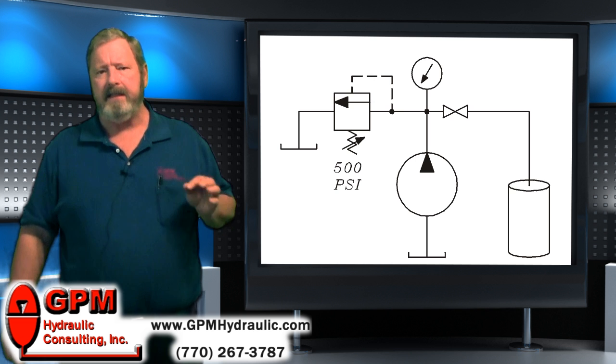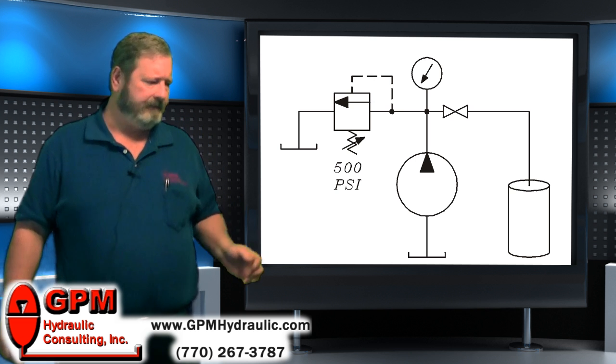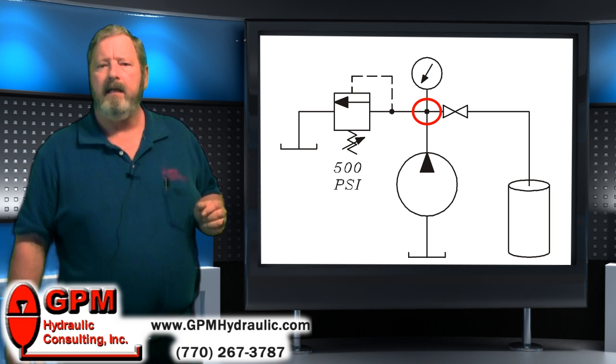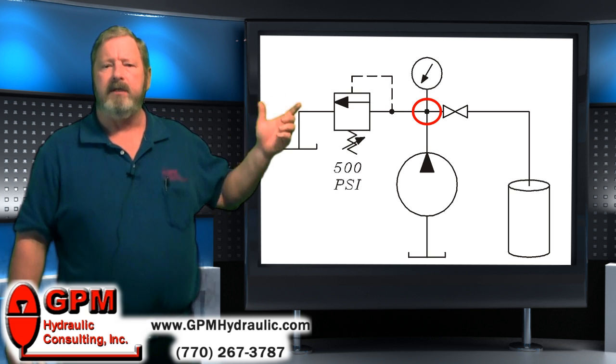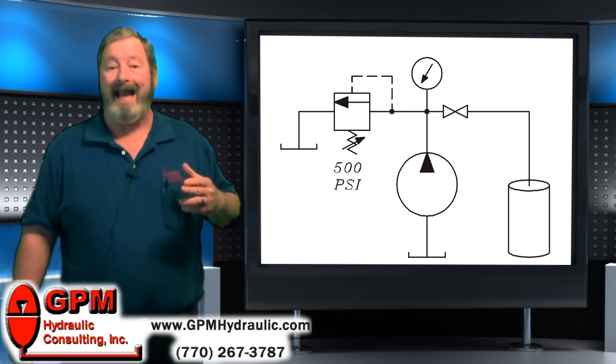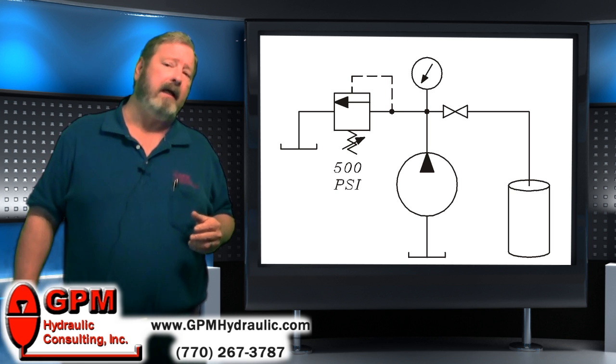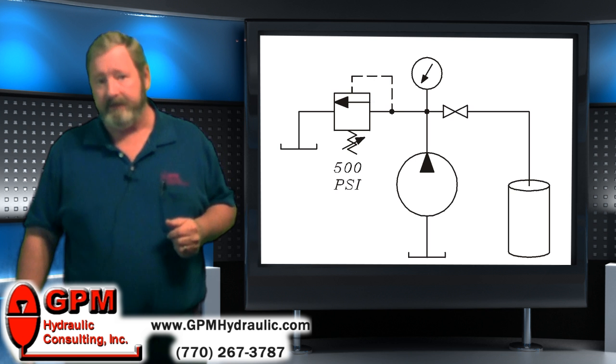Now when we're tracing the hydraulic flow on a schematic and we get to a T in the line, then we have to follow both directions to determine the path of least resistance. Hydraulic oil will always take the path of least resistance. I've known some people like that too.